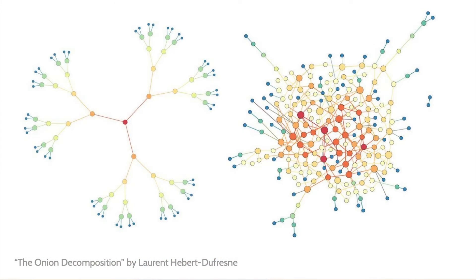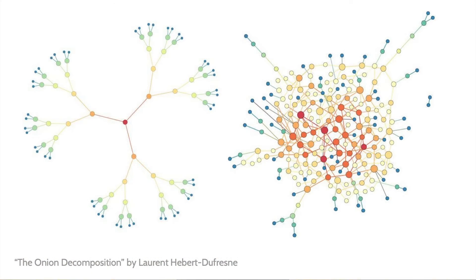I work at the Complex Systems Center at the University of Vermont. Complex systems exist in a wide range of different fields — we can think of them as nodes and linkages, or networks in a system.